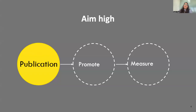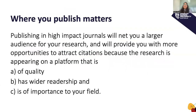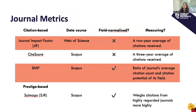First off, aiming high. Where you publish matters — it matters because some journals are of higher quality, wider readership, and it holds some weight in your research. This naturally leads to the question: how do I judge what a high impact journal is? The way to do that is through journal metrics. Journal metrics are a measure of quality based on citations. They are a proxy measure for a journal's importance in the field, because presumably researchers will cite high quality research more frequently.